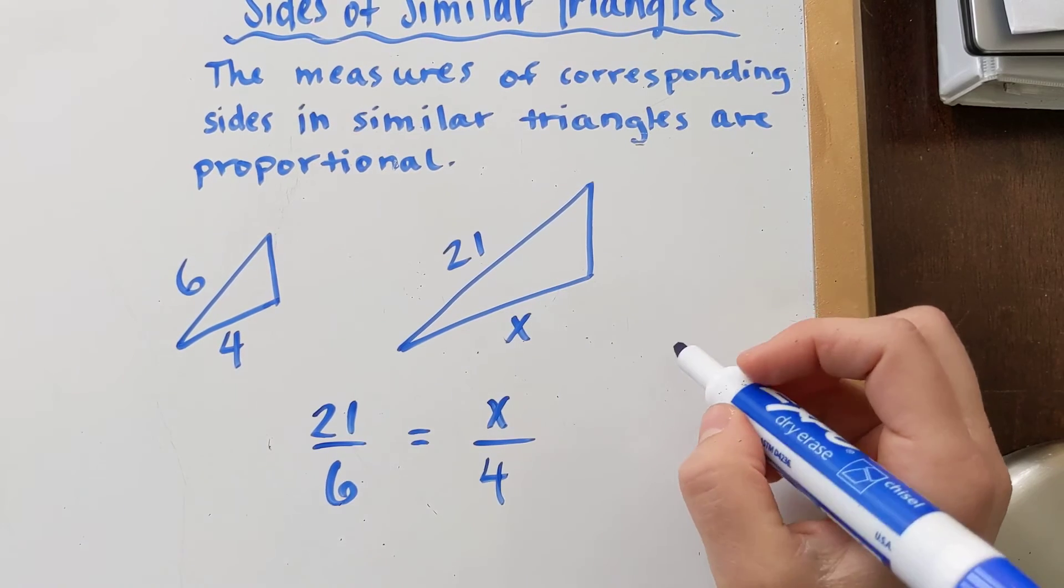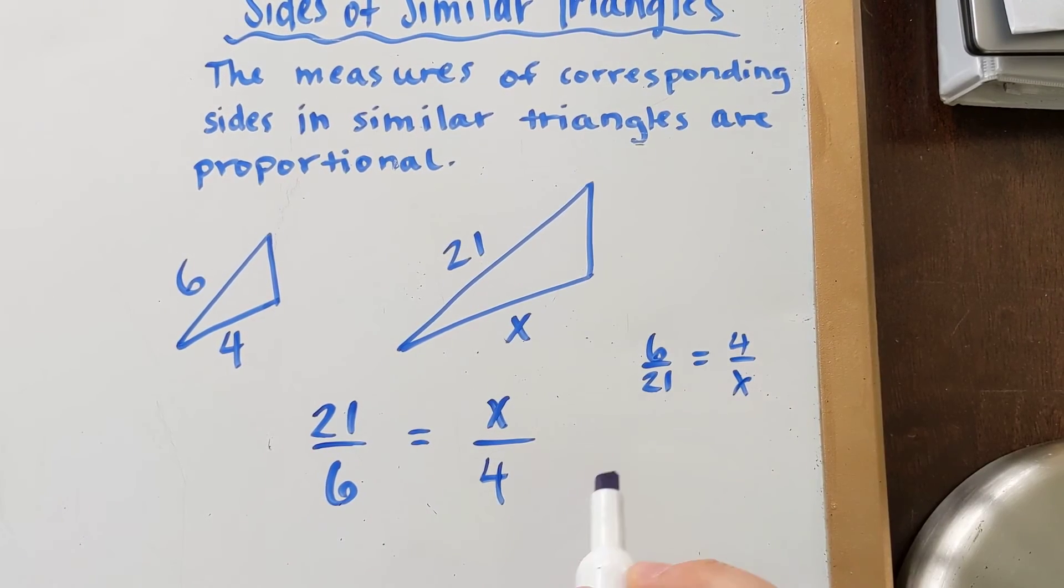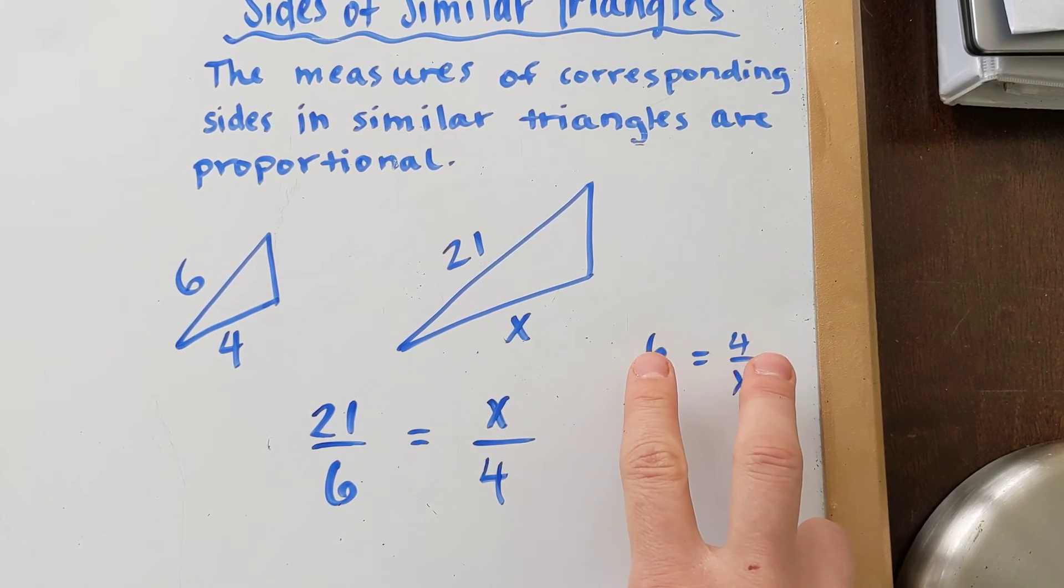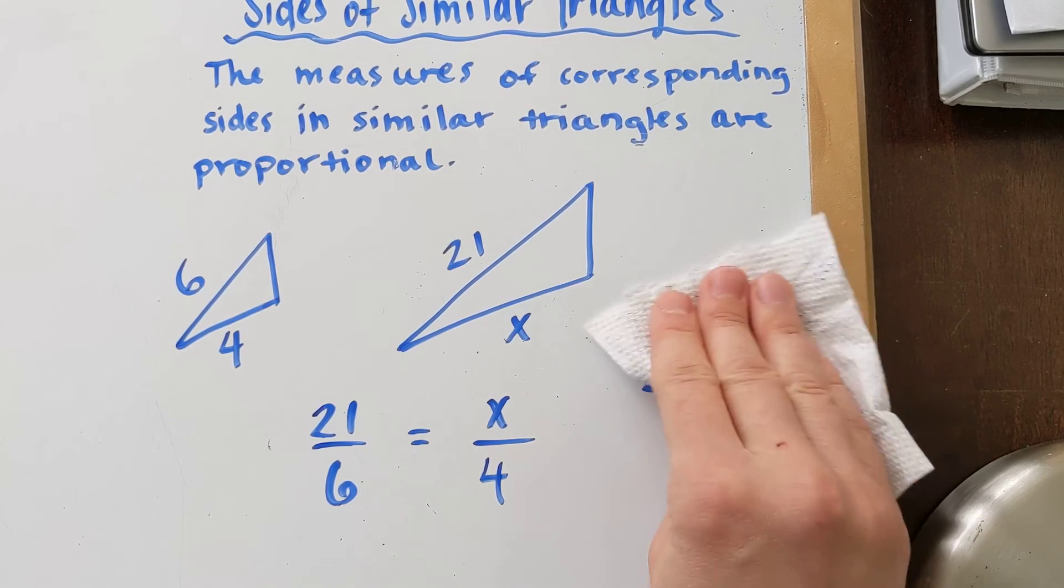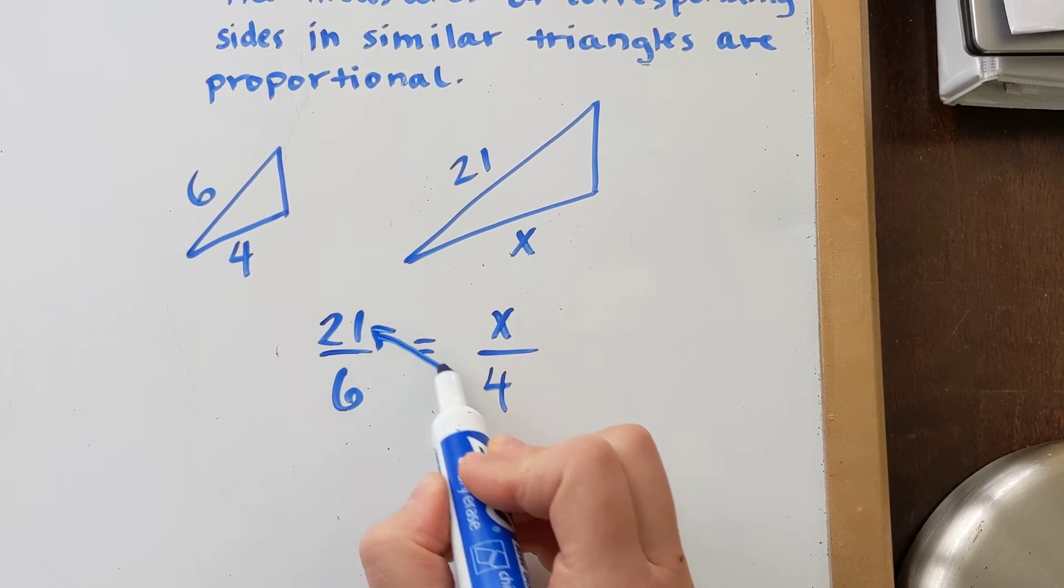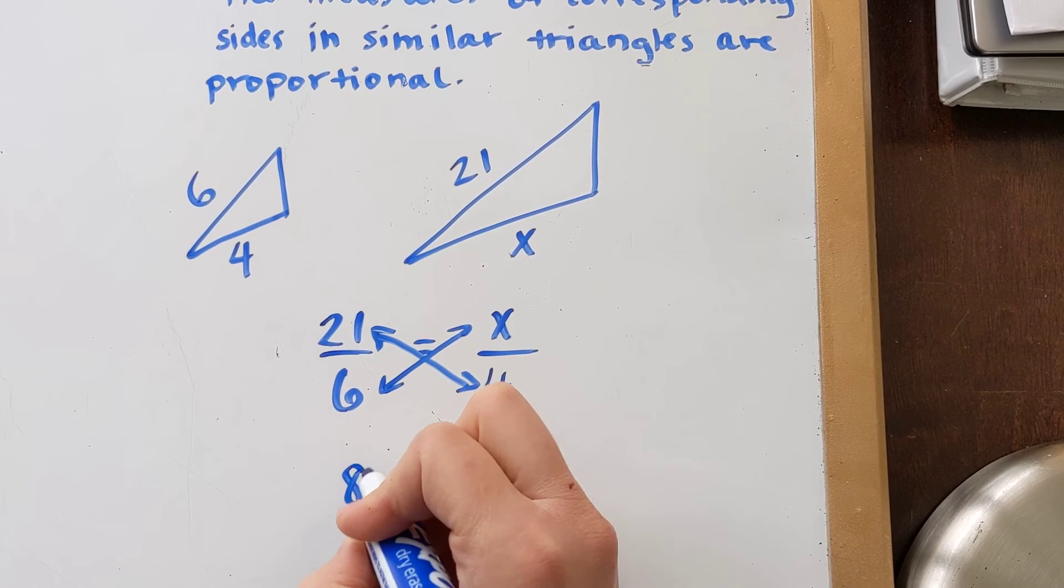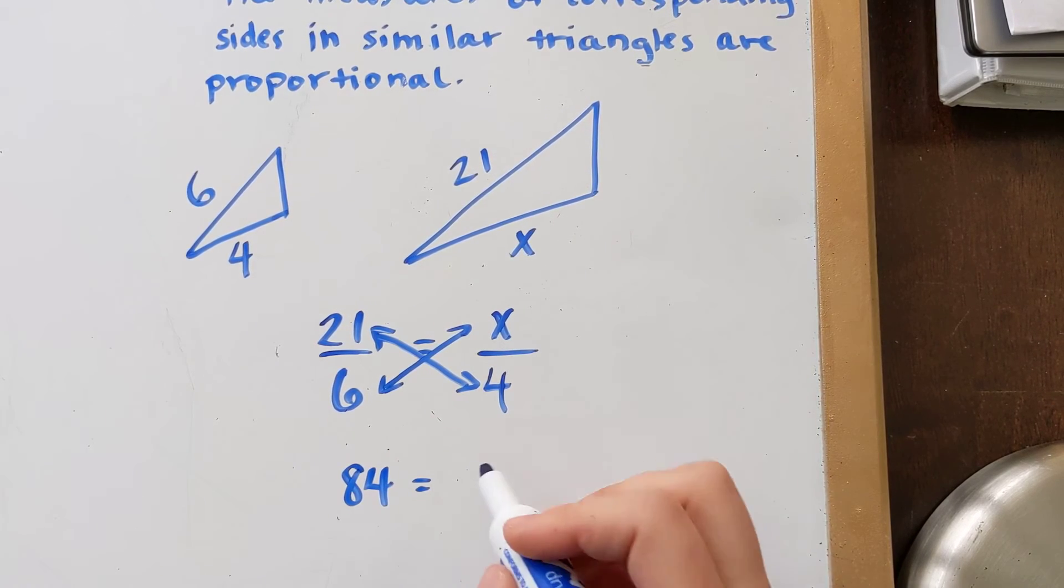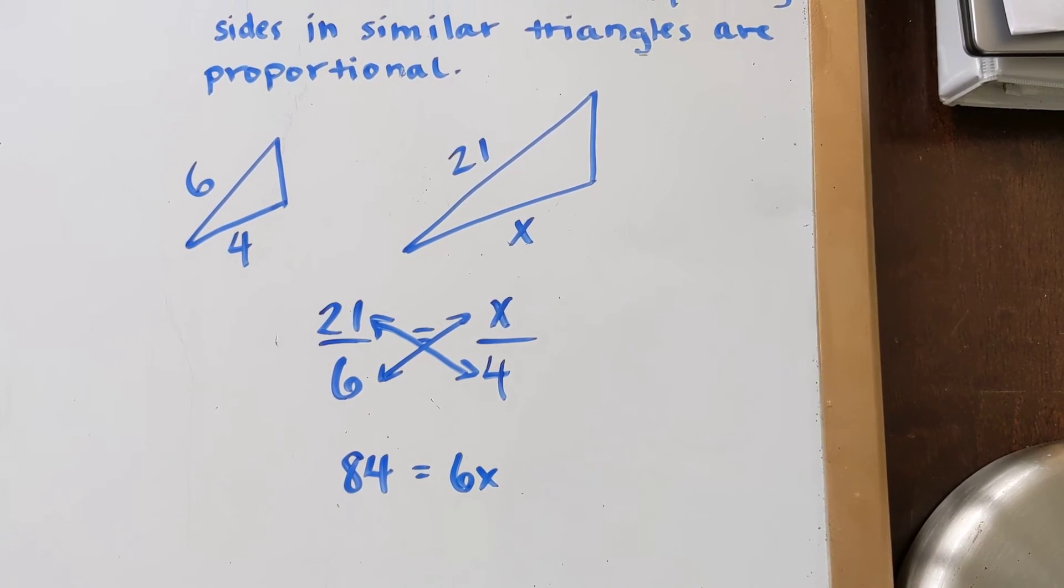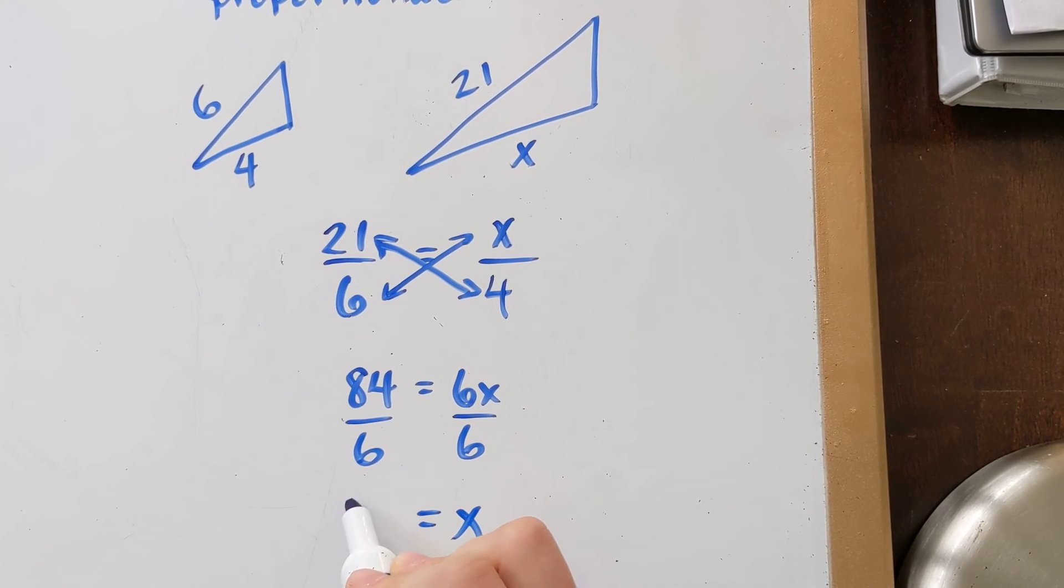It would also be okay if you wanted to use 6 over 21 equals 4 over x. Just make sure it goes in the same order. When you are solving a proportion, you do that by cross multiplication. So I am going to be multiplying the 21 and the 4. I am also going to multiply 6 and x. So 21 times 4, I am going to get 84. 6 times x, I am going to get 6x. And then all I would be left doing is dividing by 6. And I would get x equals 14.